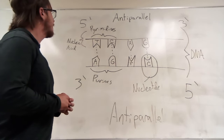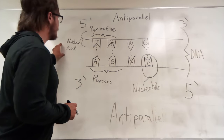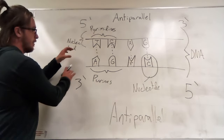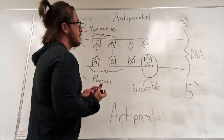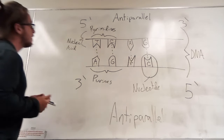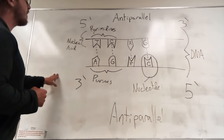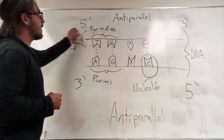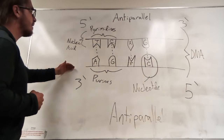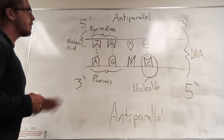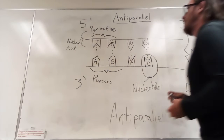On this diagram we have two nucleic acids running along to make the double helix DNA. Each strand has a five prime end and a three prime end, and I want you to take notice that the opposing strand is the opposite because these strands run antiparallel to each other.